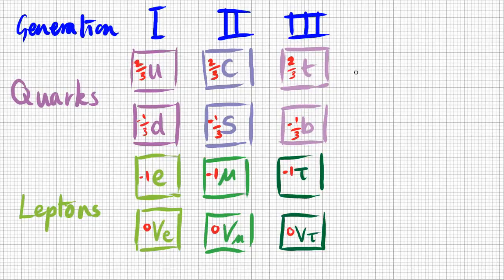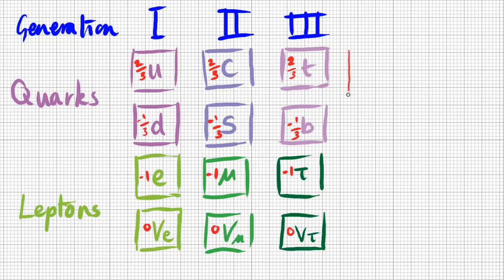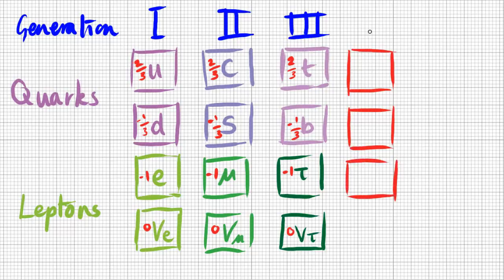So that covers most of the particles that make up matter: first generation at low energy and mass, second generation at a bit more energy and mass, and third generation at high energies and mass. But why do they interact? In physics, interactions happen because of forces, and there are four fundamental forces. So far we've discovered the mechanisms for three of those fundamental forces, finding they are governed by particles called bosons.